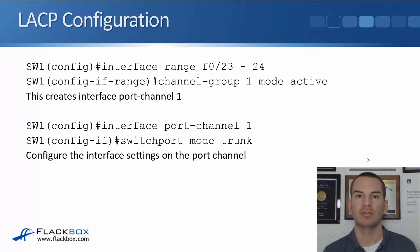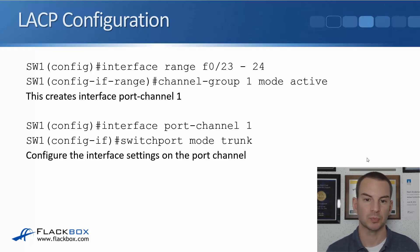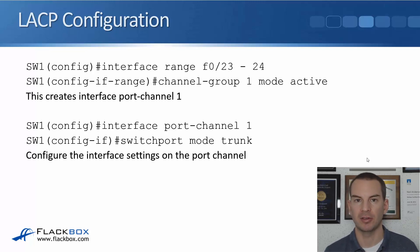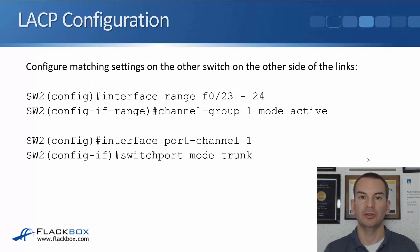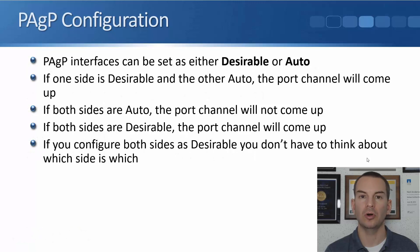The number allows you to have different port channels going to different neighbor switches. For example, the port channel going to switch two could be port channel 1, and the one going to switch three could be port channel 2. After the port channel is created, most interface settings are configured at the port channel level using 'interface port-channel 1', where you set switchport mode trunk, native VLAN, allowed VLANs, and so on. You need to configure matching settings on the switch on the other side as well.